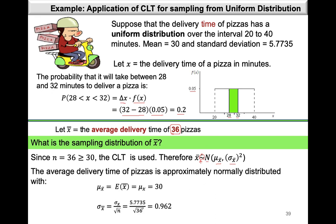So mu x-bar, which is the population mean of x, was found to be 30. And sigma x-bar is sigma x over the square root of n, where sigma x is the population standard deviation calculated as 5.7735. Dividing by the square root of our sample size, we end up with sigma x-bar equal to 0.962.